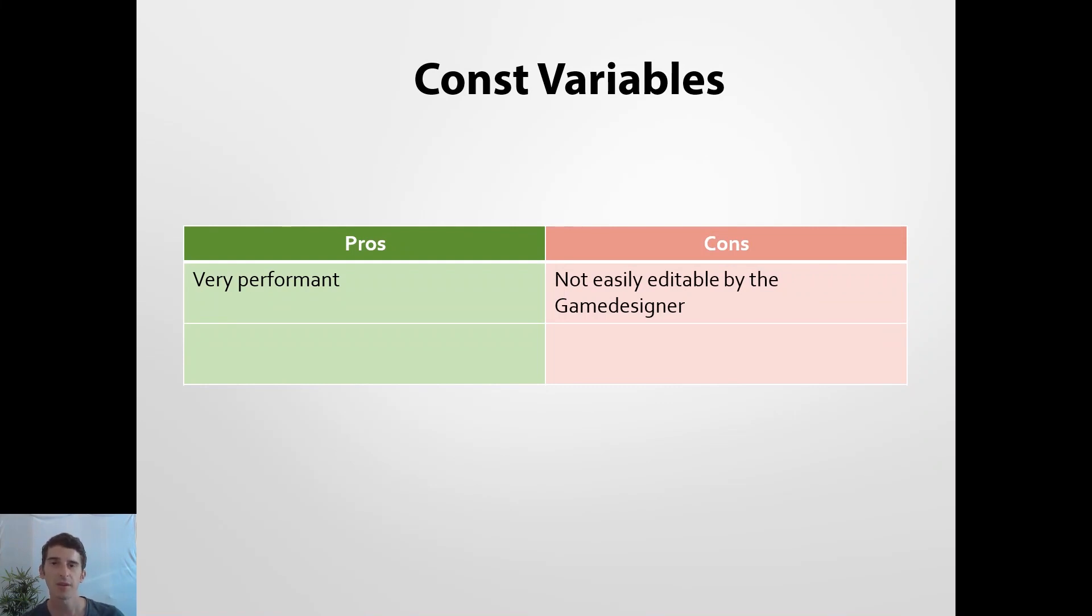And there's a good reason for that, because you're the programmer, and when the game designer messes around with your code, usually that doesn't lead to anything good. The next huge downside of constant variables is that you cannot use references to game objects or mono behaviors in constant variables. And that's a huge problem because we need to use those in most cases. So we're very restricted if we use constant variables. So that's probably not the best solution there is to our problem. Let's look at the next one.